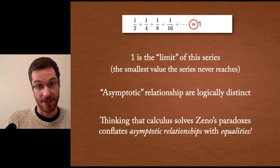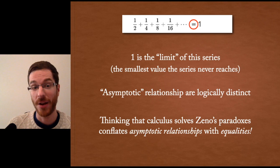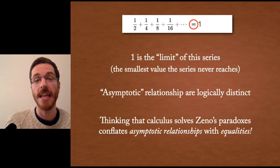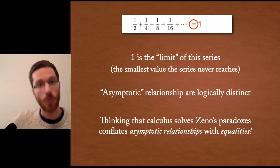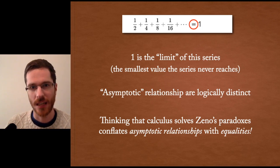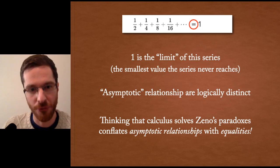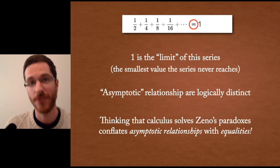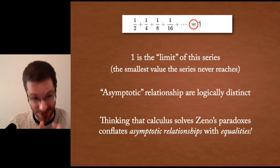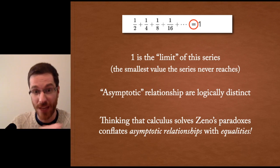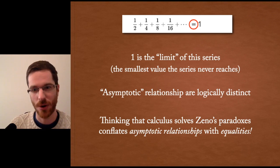So, thinking that calculus solves Zeno's paradoxes is conflating the asymptotic relationship with an equality relationship that is a logical and profound error. And in fact, that right there is sufficient to say calculus doesn't solve Zeno's paradoxes. For that very reason, it's dealing with asymptotic relationships and not equalities.